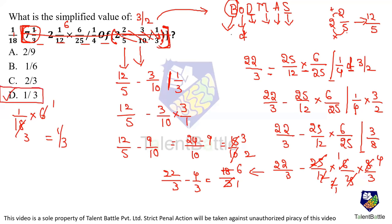Always follow BODMAS when solving simplification questions. Whenever you have a mixed fraction, always convert it to a normal fraction first. Priority order: brackets, then 'of', then division, then multiplication, then addition, then subtraction. Following this gives the exact answer. The answer for this question is option D.